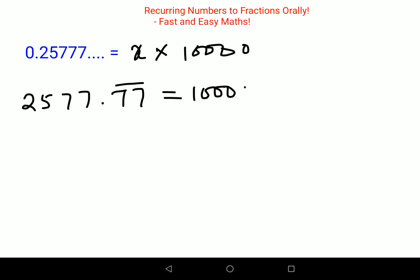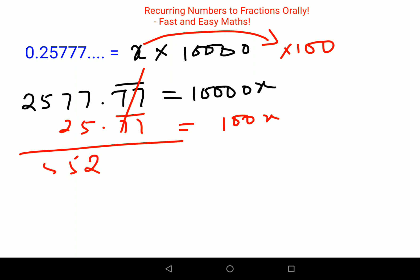Now again, in order to do the cancellation of the recurring part, I will multiply this by 100. When I do that, I get just 25.77 which is recurring. So I am now left with this getting cancelled, so this is 2552.